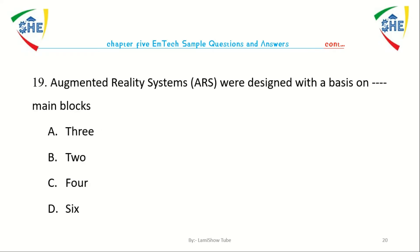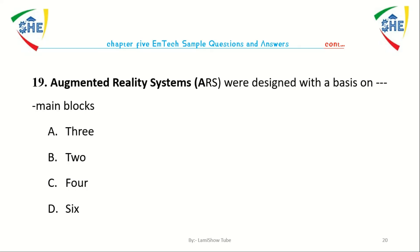Question number 19: Augmented reality systems were designed with a basis of dash main blocks. Options: A) 3, B) 2, C) 4, D) 6.